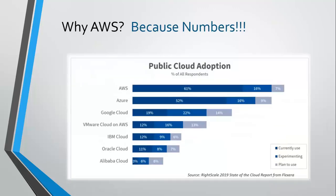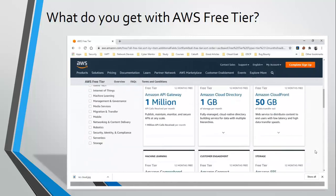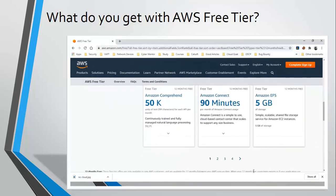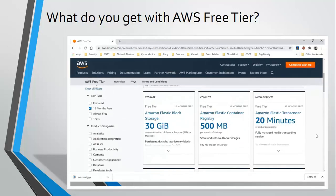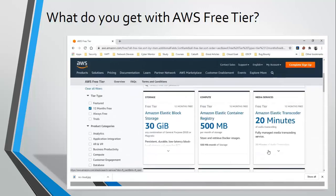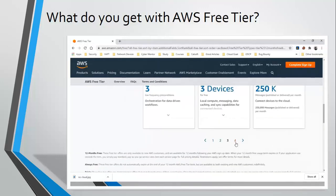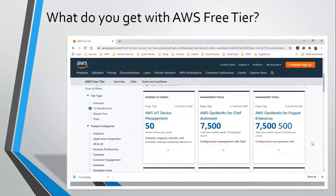Apart from this, AWS offers 12 months of free access to many of its services in the form of its free tier account. We are going to leverage this facility as we move along with this series and practice all of the scenarios. Here is the list of what you can get for free. Let's move on and create an account.